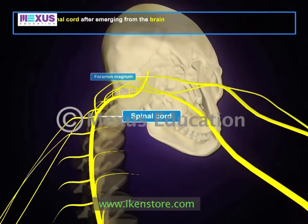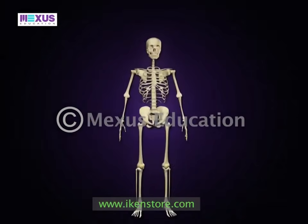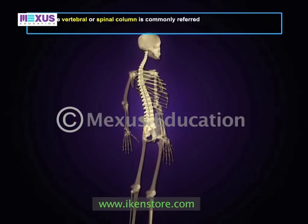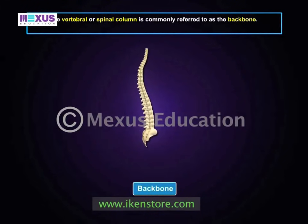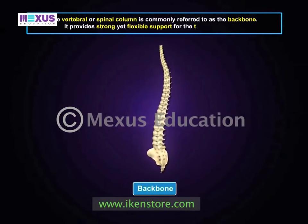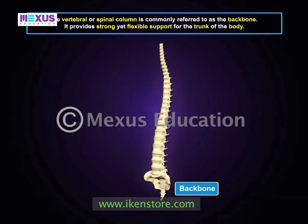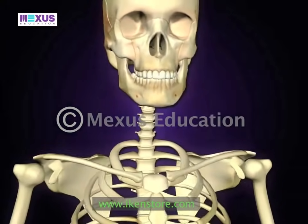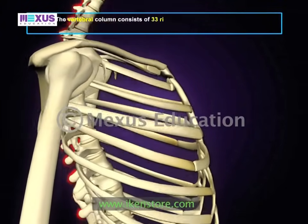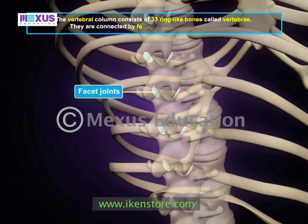The posterior part of the cranium contains a large hole called the foramen magnum, through which the spinal cord, after emerging from the brain, continues into the backbone. The vertebral, or spinal, column is what we commonly refer to as the backbone. It provides strong yet flexible support for the trunk of our body.